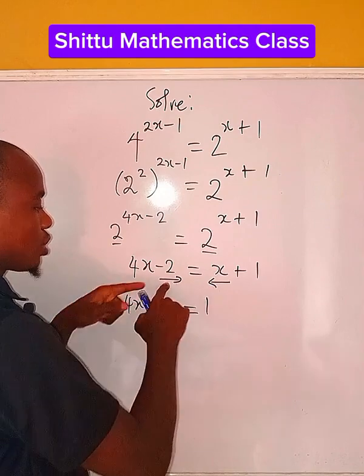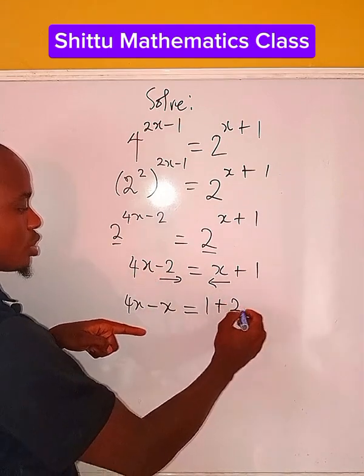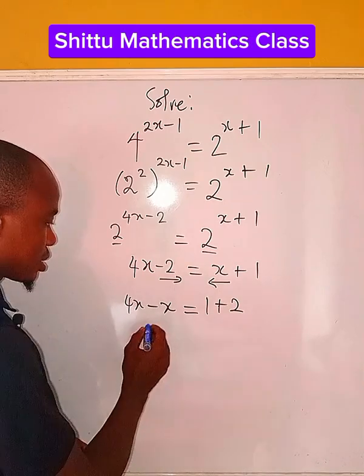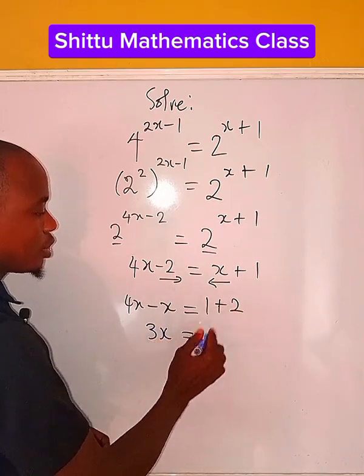Then equals 1, because this is going to the other side, it will change to positive. So we have 4x minus x, that is 3x. We have 3x equals 1 plus 2, which is 3.